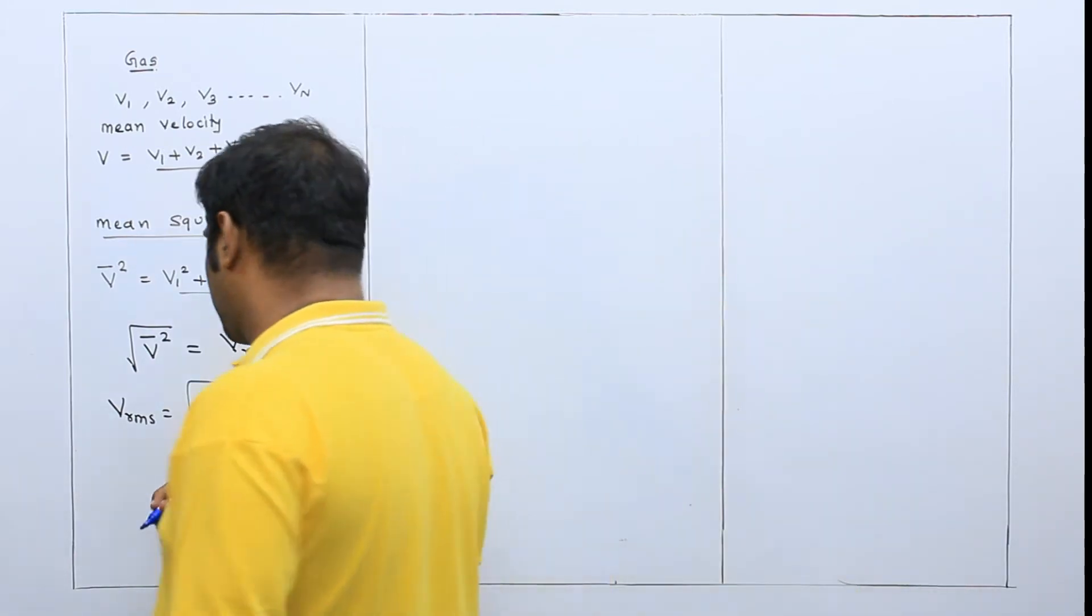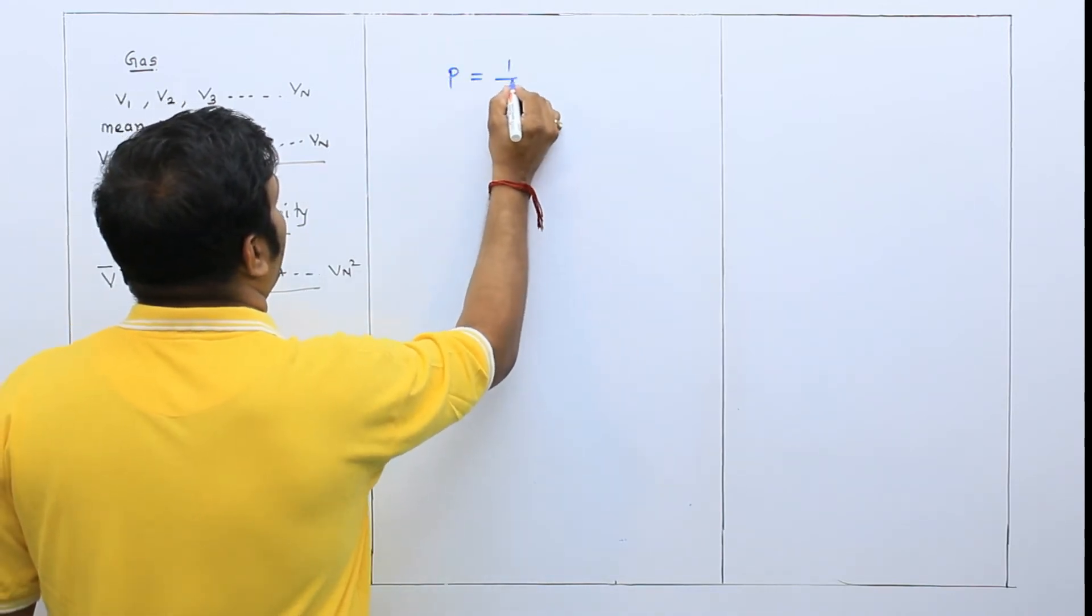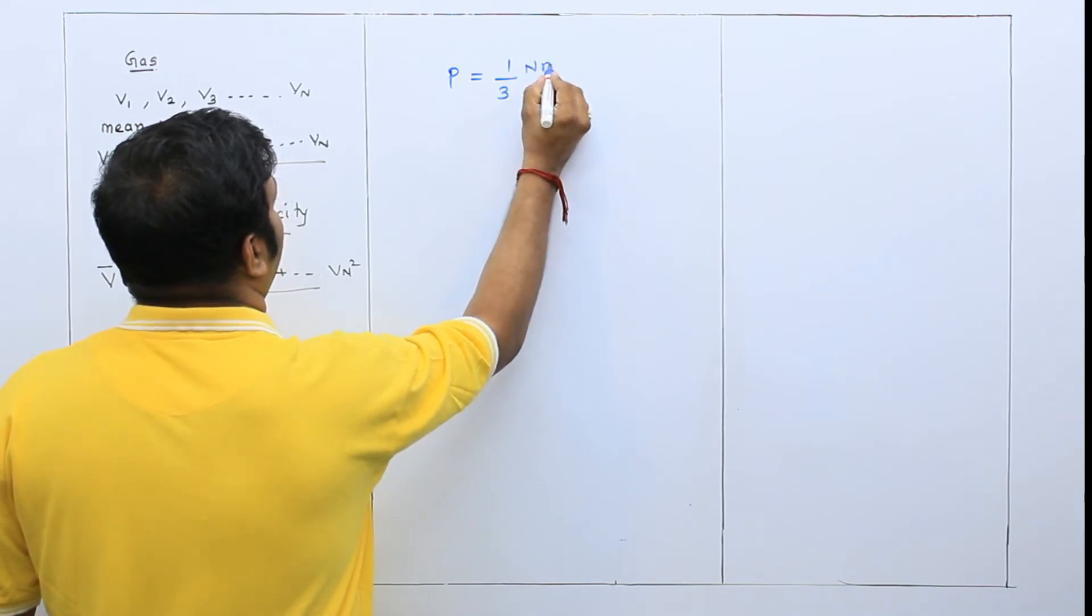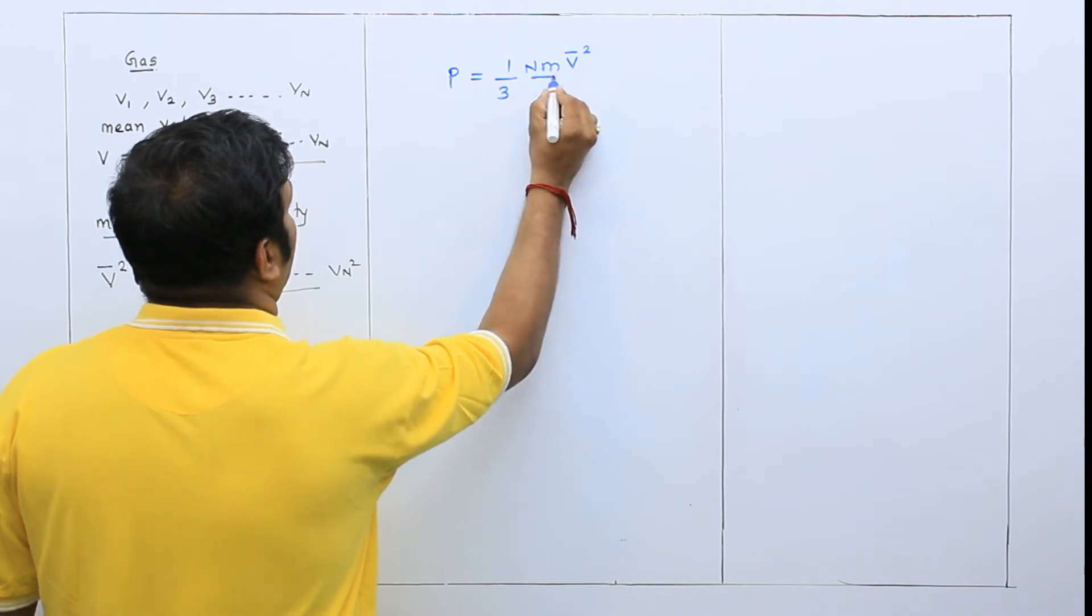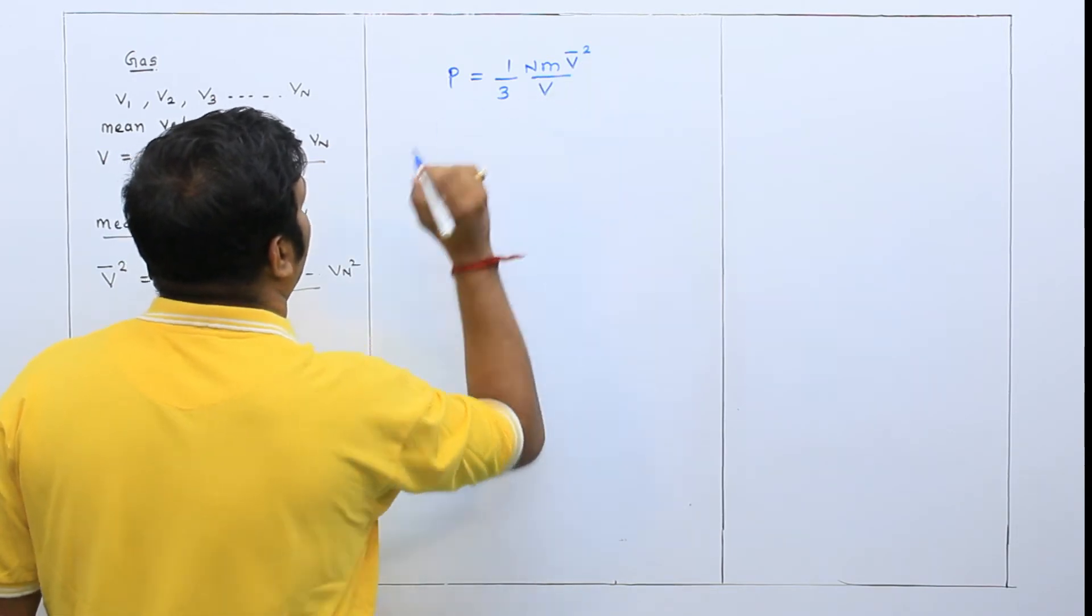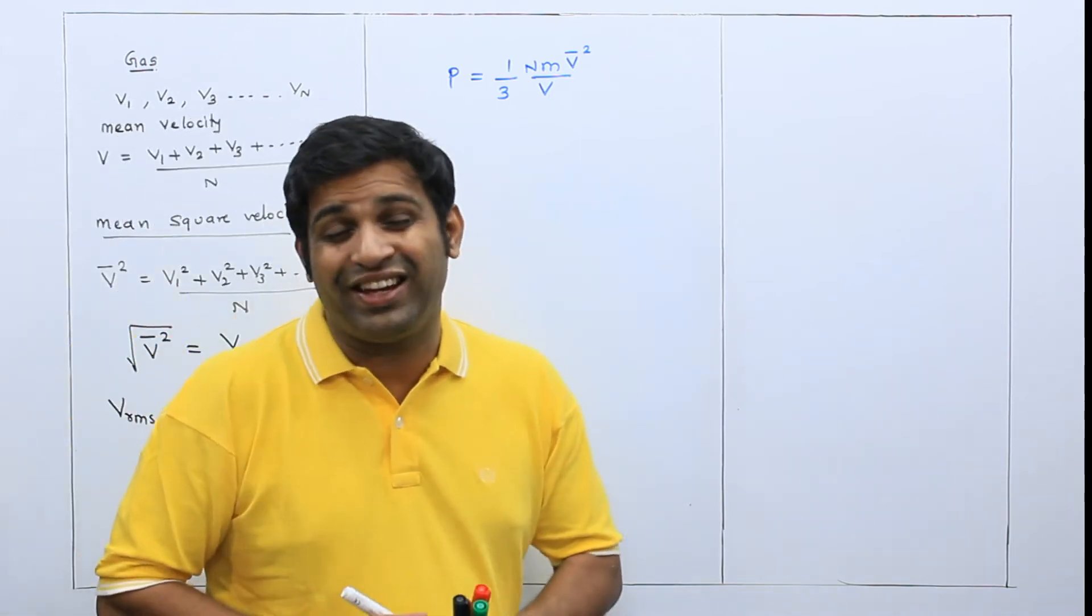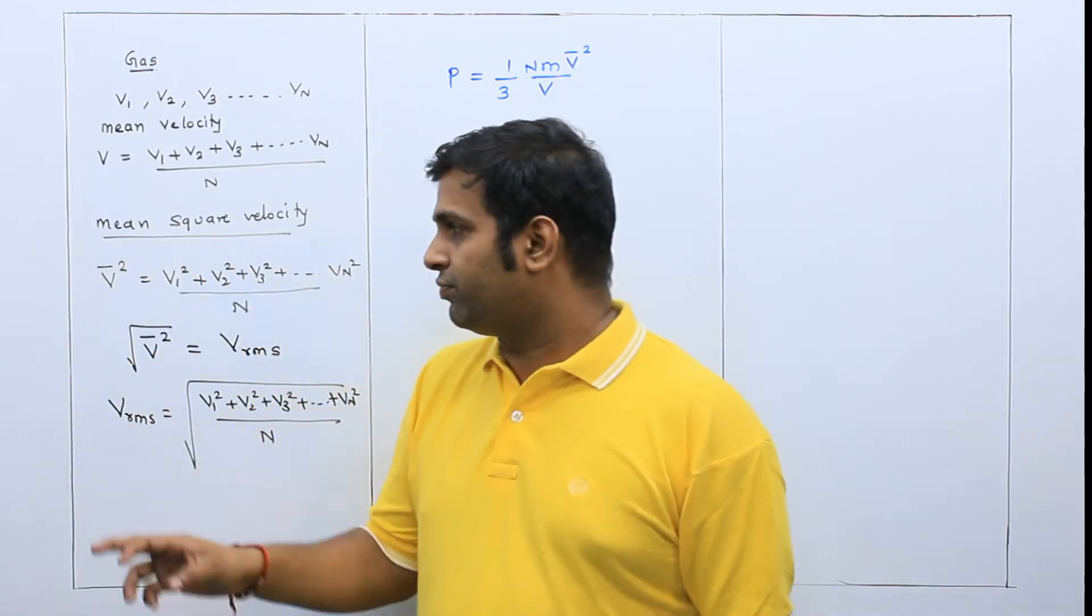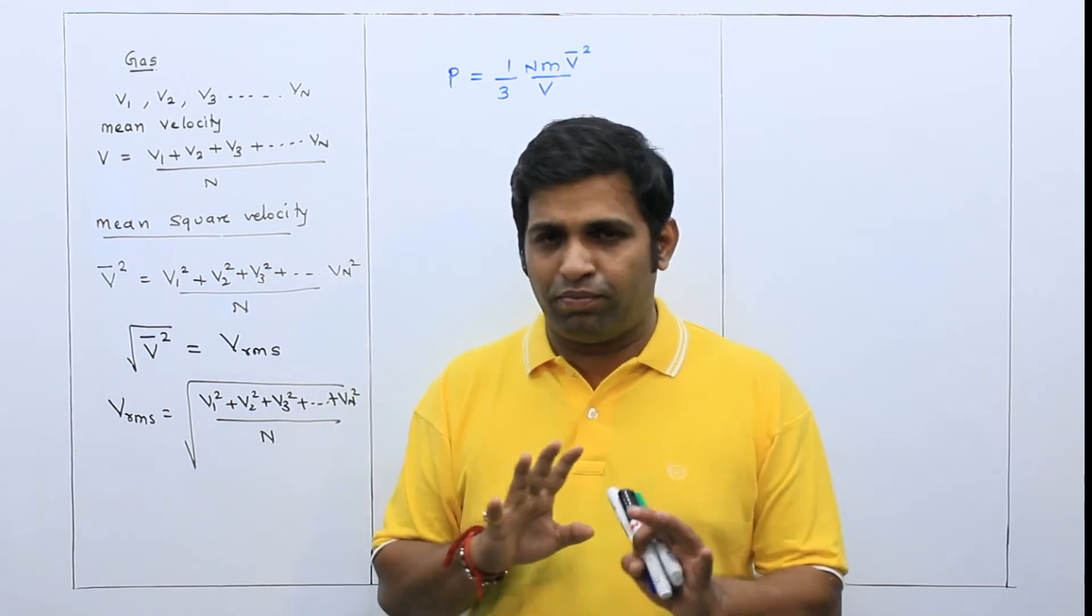See, what we derived in the last lecture. Pressure of the derivation. What is 1 by 3? nm v bar square upon capital V. And capital V is the volume of the container in which it is kept. Now, if you understand v bar square, it is mean square velocity.